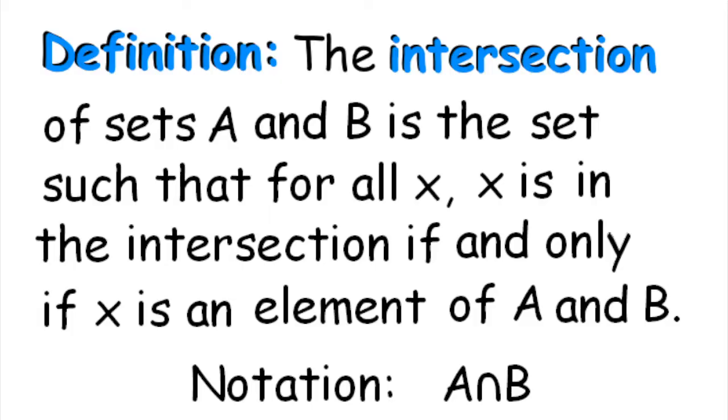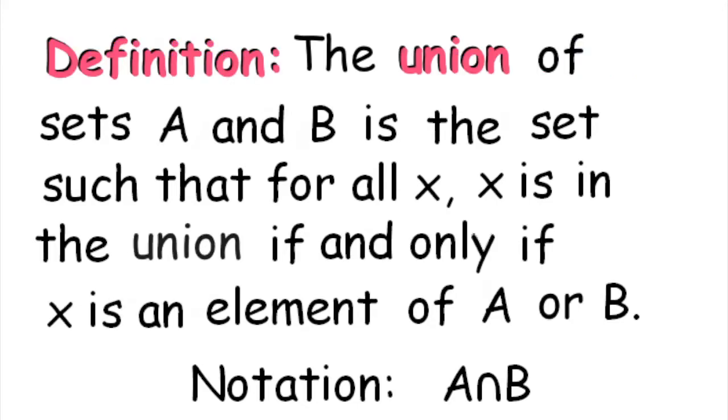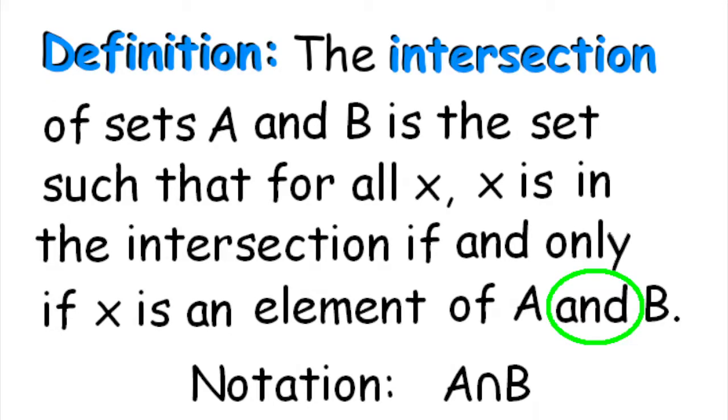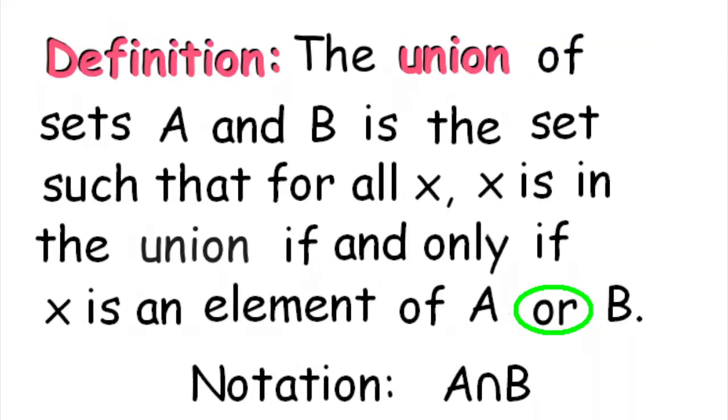Interestingly, when we define intersections and unions of sets, you will see that they only differ by a tiny, tiny word. So, here is the definition. The intersection of sets A and B is the set such that for all X, X is in the intersection if and only if X is an element of A and B. Now, for the union, here is the definition. If A and B are sets, then A union B is the set such that X is in A union B if and only if X is in A or X is in B. So, the one difference is that this word from AND changed into OR. Now, what does it mean something is in A or B? That means in A only, in B only, or in both.